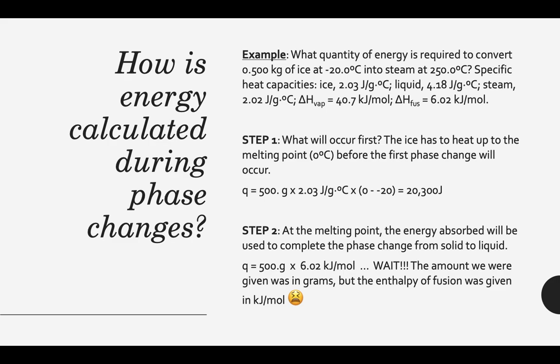I've got ice at -20°C that I need to turn into steam at 250°C. First, the solid heats up to the melting point — from -20°C to 0°C. Using q = m × specific heat of ice × ΔT, with mass converted to 500 grams (watch those units — the specific heat of ice is not the same as for water), and ΔT = 0 − (−20) = 20°C, that gives 20,300 joules. Note the units: grams and degrees Celsius cancel out, leaving joules.